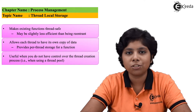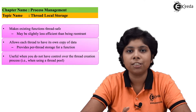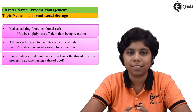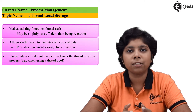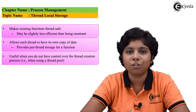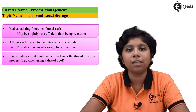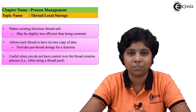But for thread local storage, it is visible to all functions invoked during the process's system calls. A function can see the thread local storage — the unique data structure for each thread — through each system call or function call made by the process.